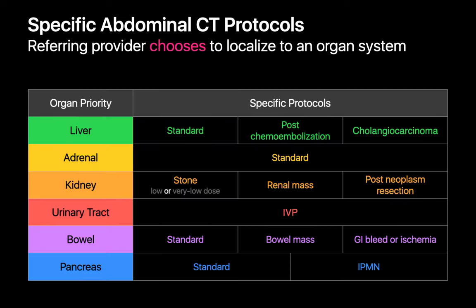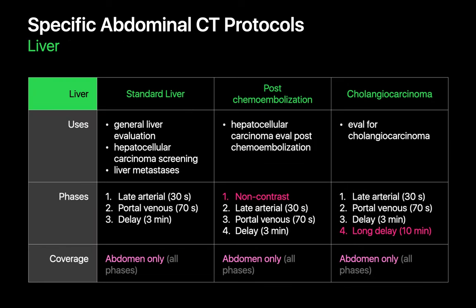Now that we have the basics done, let's go through some examples of abdominal CT protocols you might encounter, which we can split into specific and generic protocols. Specific abdominal CT protocols are tailored for a particular organ of interest and used when the referring provider is able to localize their primary clinical question to a specific organ. Three specific abdominal CT protocols that address the liver are the standard liver protocol, post-chemoembolization protocol, and cholangiocarcinoma protocol. The standard liver protocol is typically used for general liver assessment, HCC screening, and when we're concerned about liver metastases.